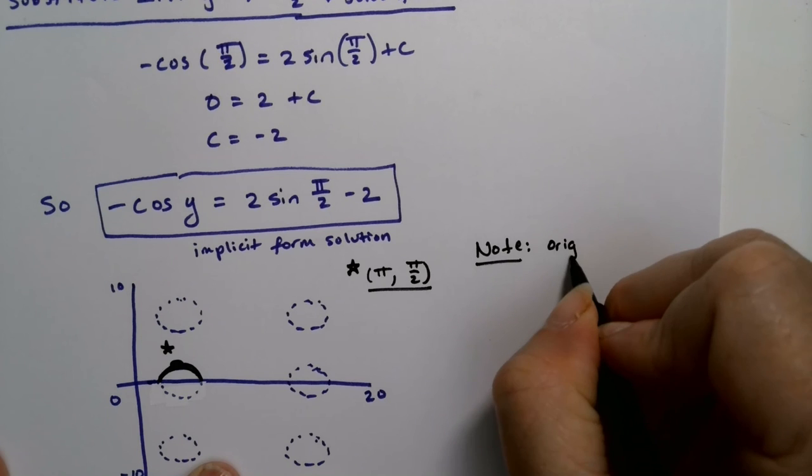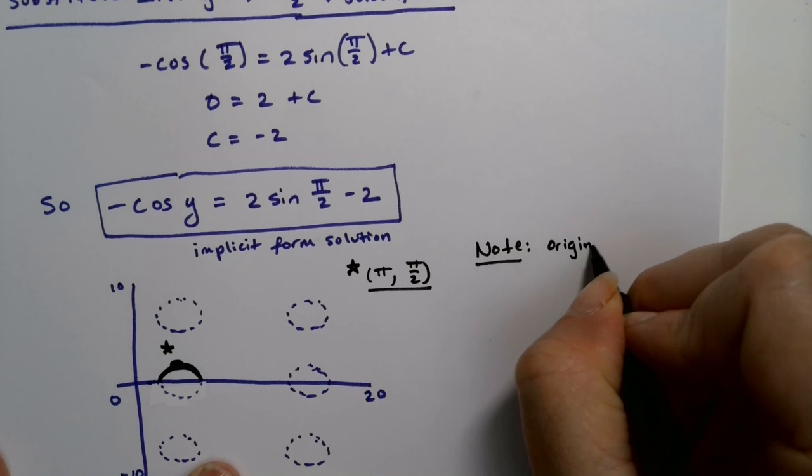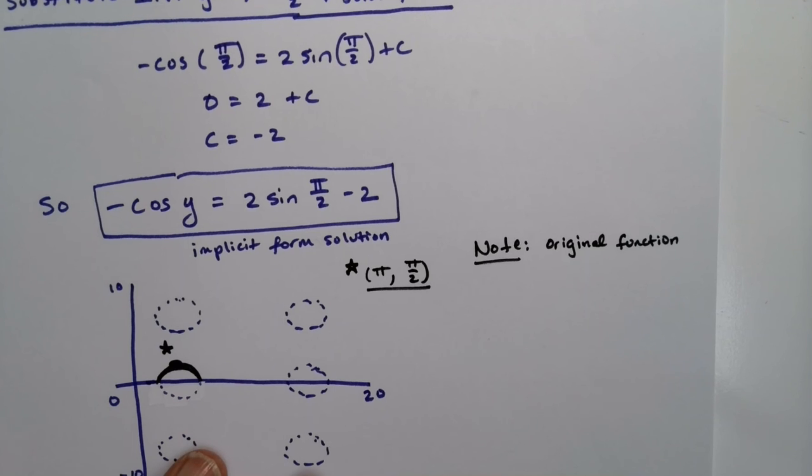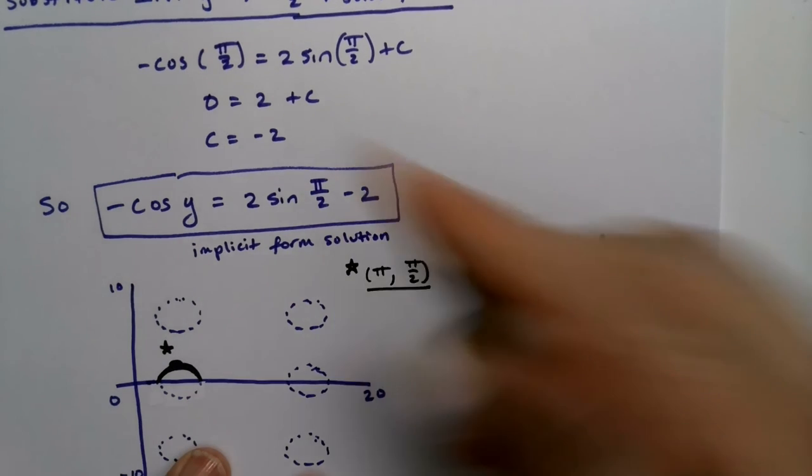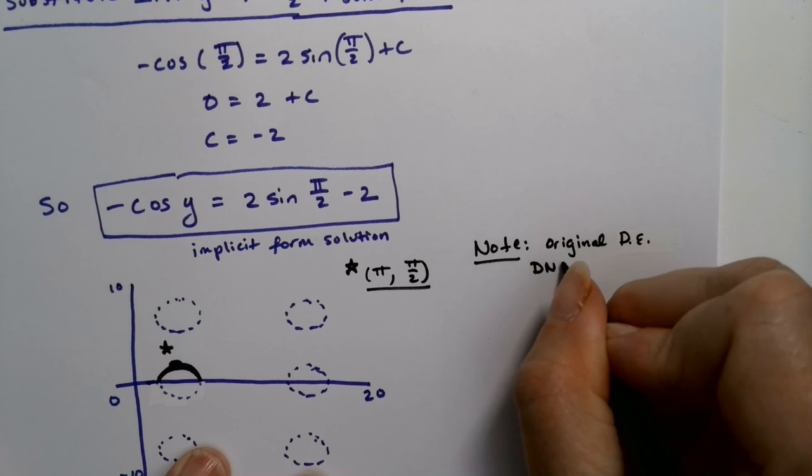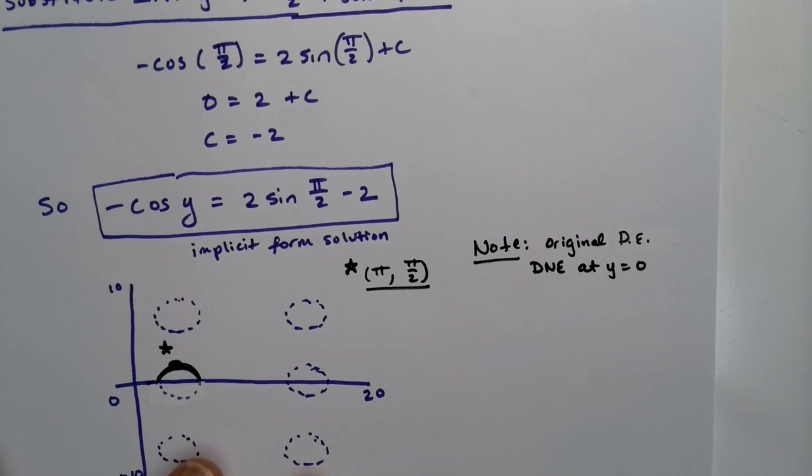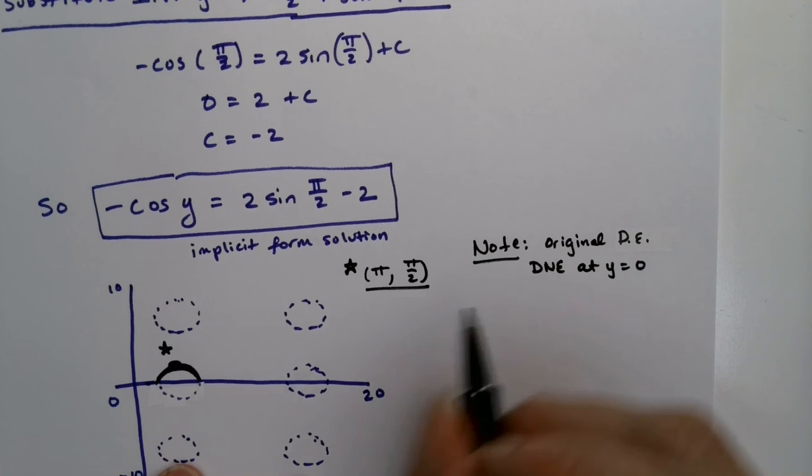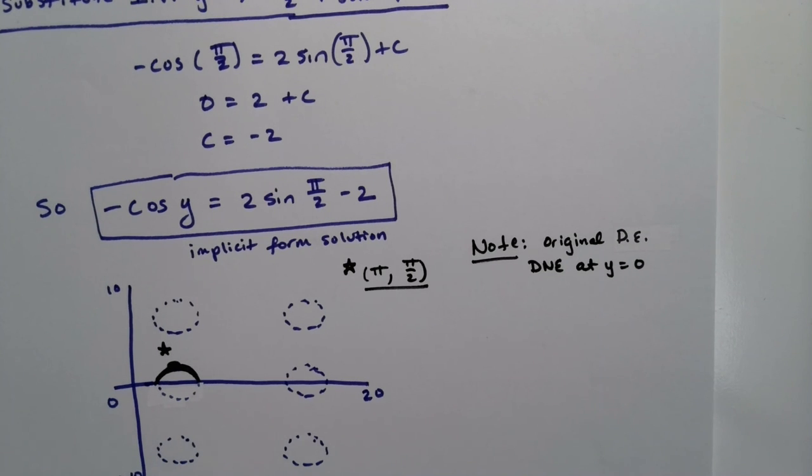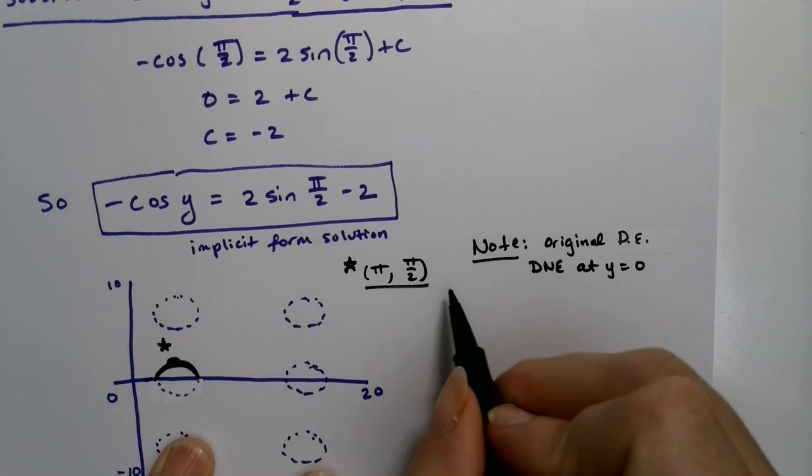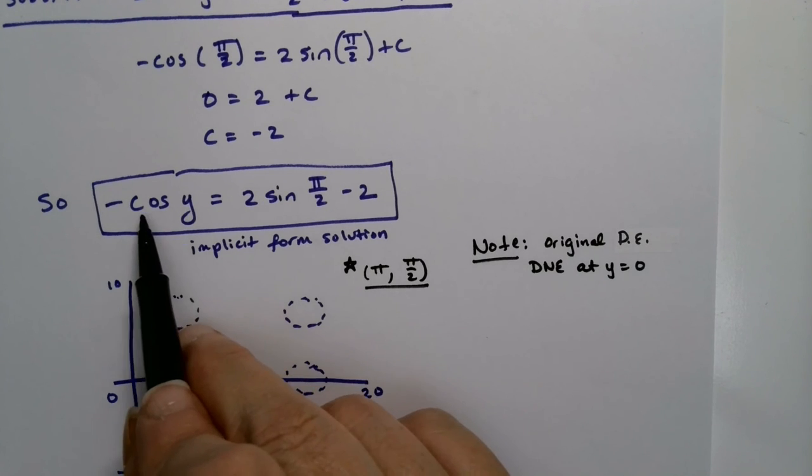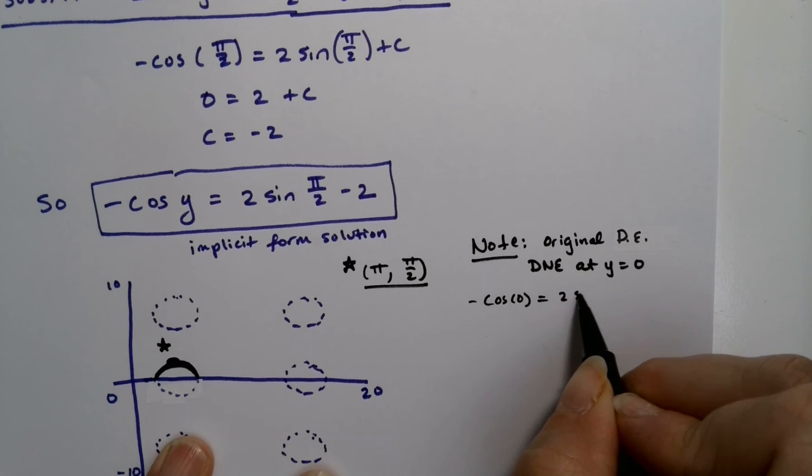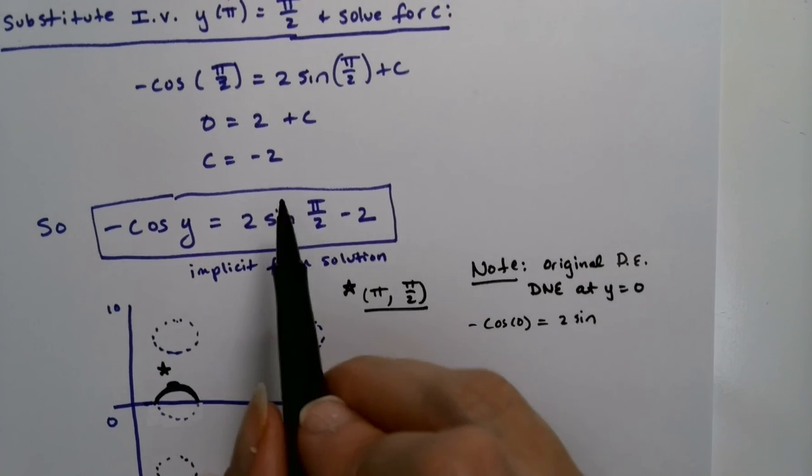The original function... Well, I guess relationship is a better word for it. But original differential equation, how about that? The original differential equation does not exist at y equals zero. It can't. Okay. So if y is equal to zero, what would that mean for the rest of it? Using this substitution in here. So if I let y be equal to zero, that'd be the negative cosine of zero, would be equal to two sine... Oh, that's x over two.